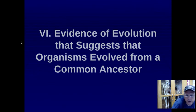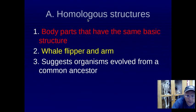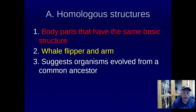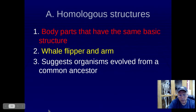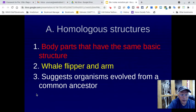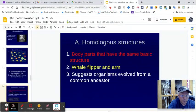What are some evidences that suggest that maybe we come from a common ancestor? One argument is homologous structures. Homologous structures are body parts that have the same basic structure but they don't have the same function — they have the same structure but different functions. Let me show you something here real quick while I'm on this subject.